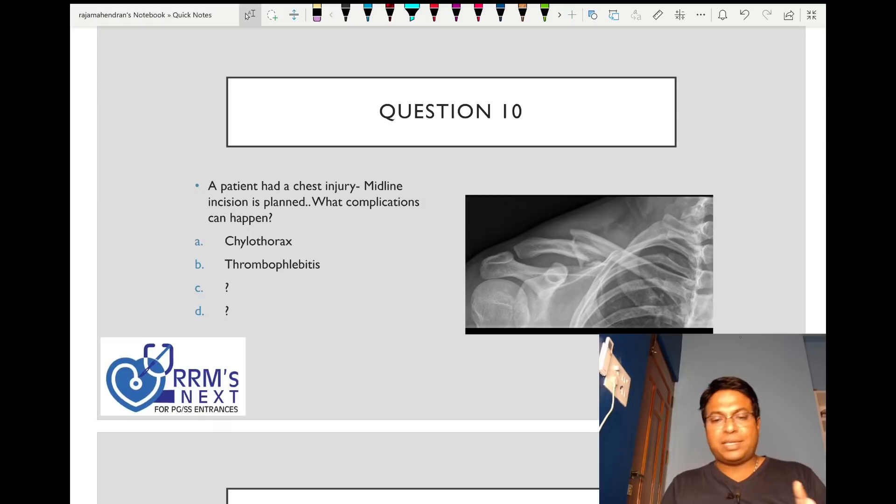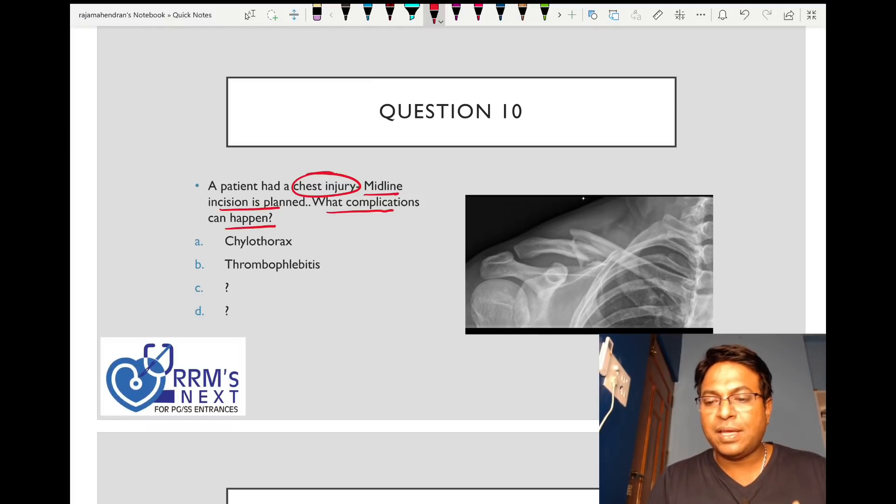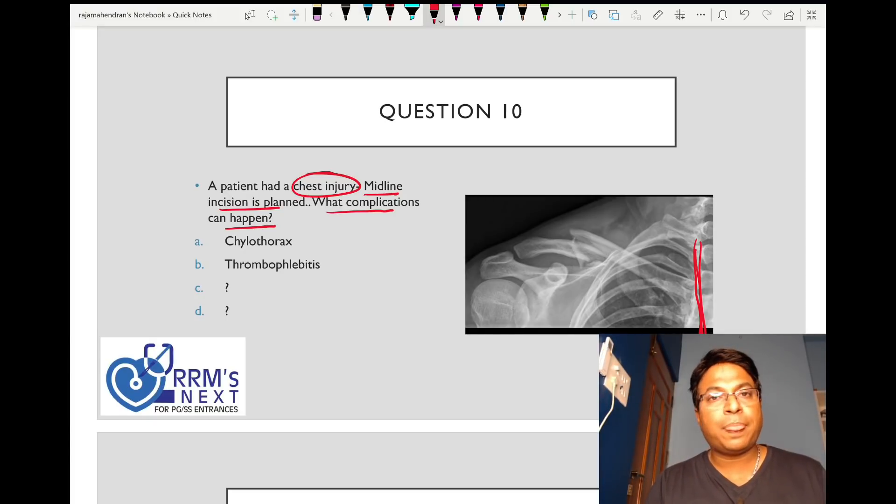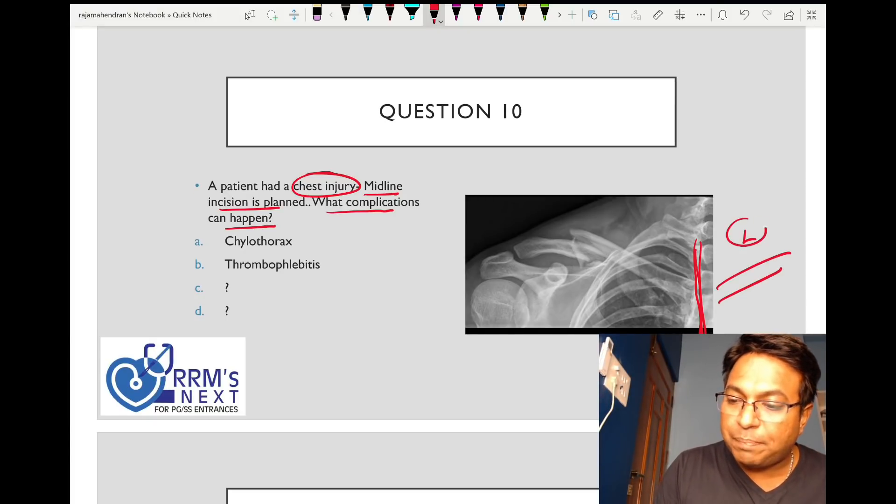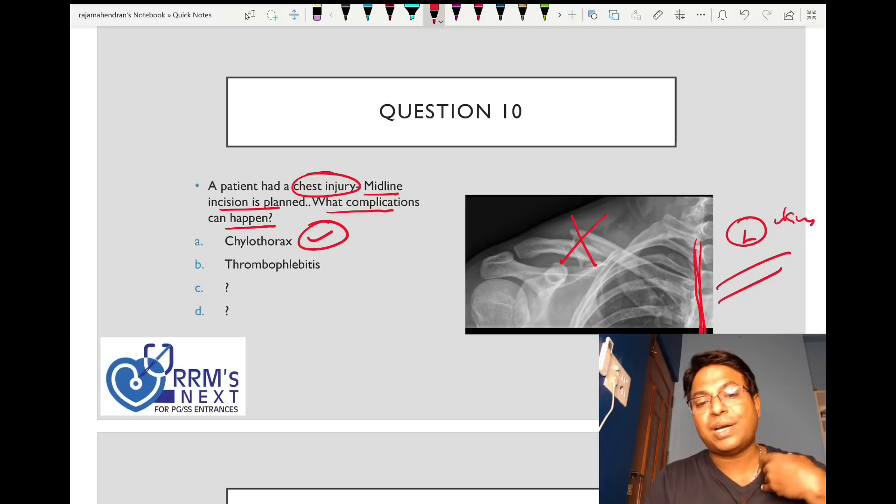Patient had chest injury. Midline incision is planned, showing clavicle fracture on x-ray. When doing midline incision for clavicle fracture, especially if it's left side clavicle as shown in the picture, you can get chylothorax. This is an applied anatomy question. Left side clavicle injury can cause chylothorax from injuring the thoracic duct as it enters here.